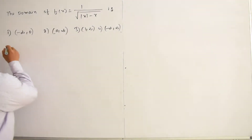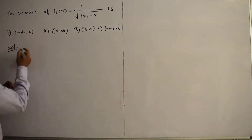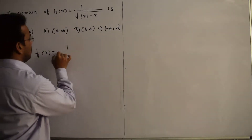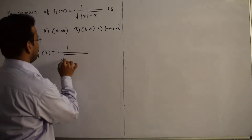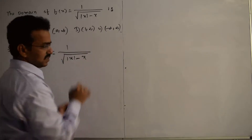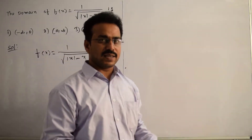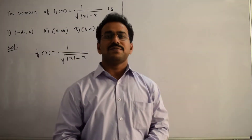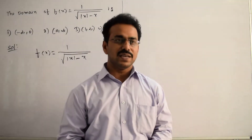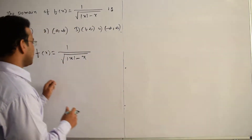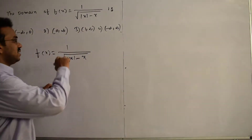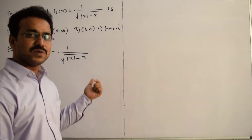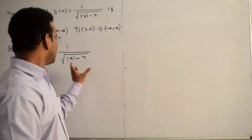The given function is f(x) = 1 / √(|x| - x). Clearly, this function is in the form of a fraction. For fractions, the denominator can never be 0. At the same time, since there is a square root in the denominator, the expression inside must be greater than 0.